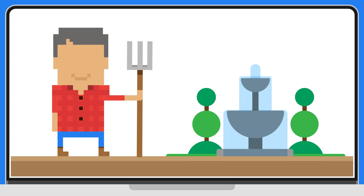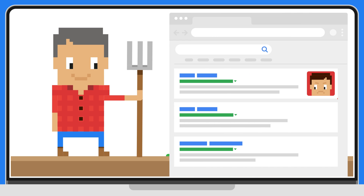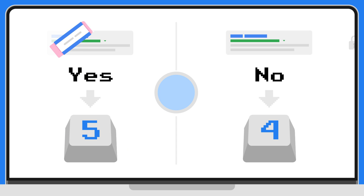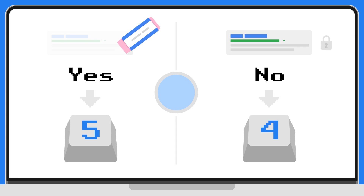Question two. Ten years later, Peter has left politics completely and is now a landscaper. He wants his past political search results to be removed. Should you now delist Peter's past political results from search?